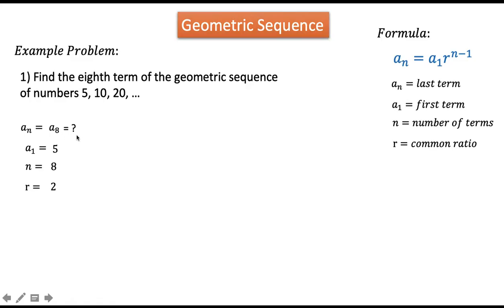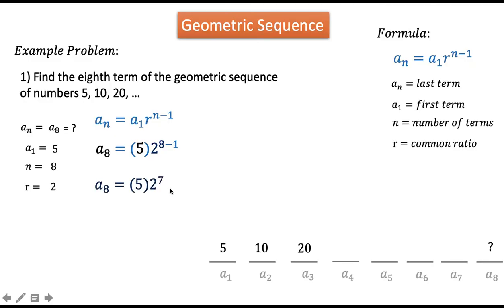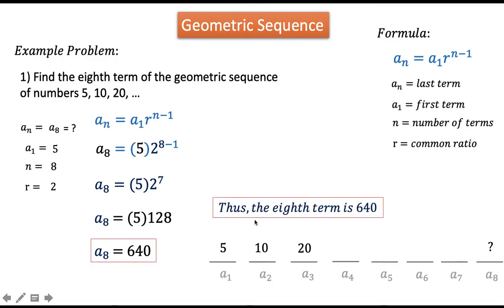The first three terms — 5, 10, and 20 — are given, and we need to find the 8th term. We write the formula, substitute the given values, and solve. By order of operations: 8 minus 1 is 7, then 2 raised to 7 is 128, and 128 times 5 is 640. Therefore, the 8th term in this geometric sequence is 640.